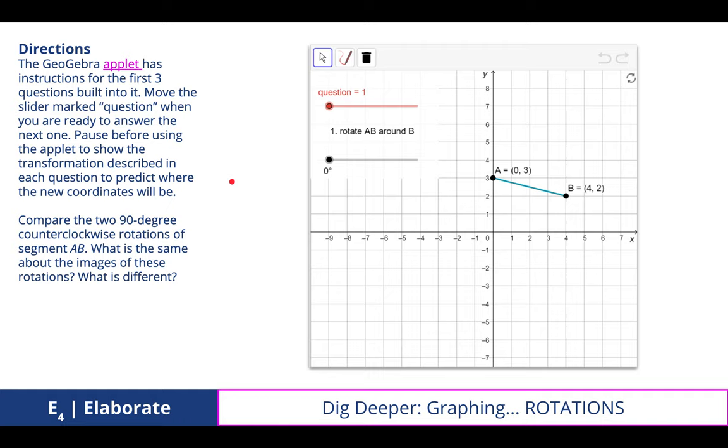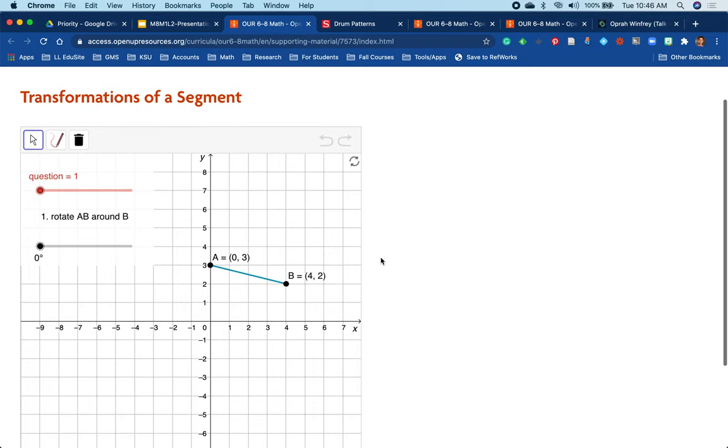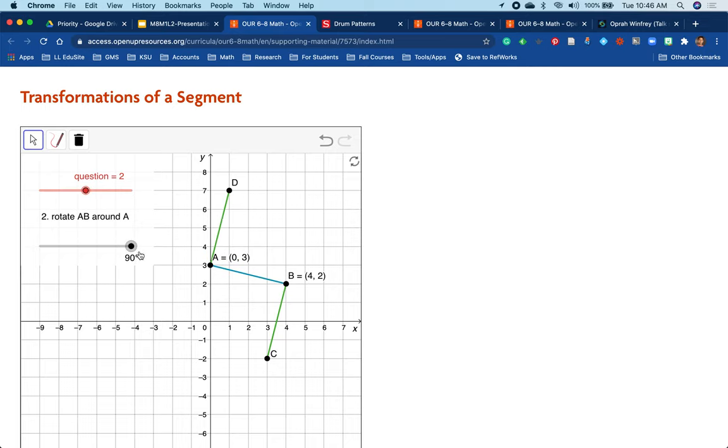Finally, we have this GeoGebra applet, which looks at a line segment and rotates it. But you'll notice that if we rotate this line segment twice using two different points of rotation, we could actually use a single translation to describe that movement. And so if I rotate AB about the point B 90 degrees, and then rotate that same point AB about the point A,